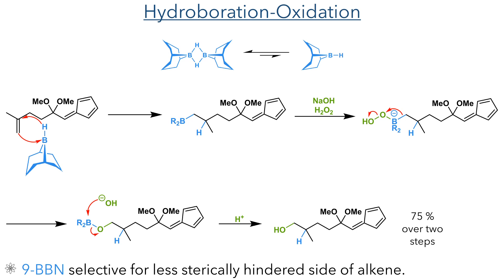The peroxide adds to the boron to form a borate, and this intermediate then undergoes a migration, forming a carbon-oxygen bond. Hydroxide can then act as a nucleophile towards the boron, eliminating it to produce a primary alcohol upon workup, with a 75% yield over two steps.